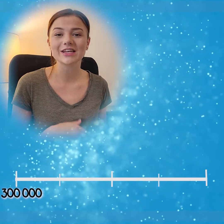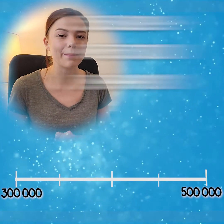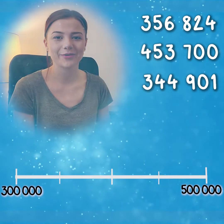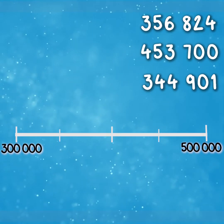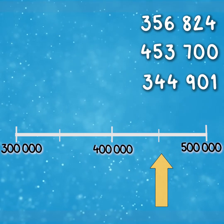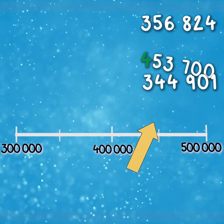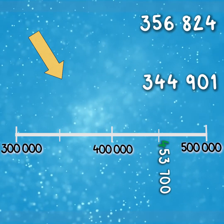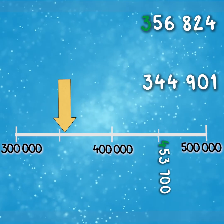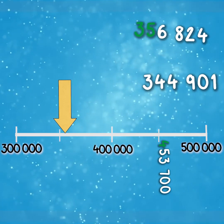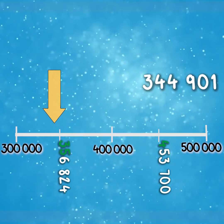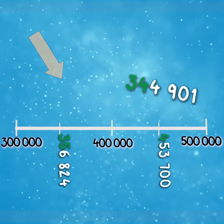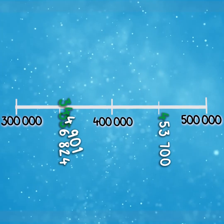We can check this using a number line too. Here is a number line that goes from 300,000 to 500,000. Can you try and place our three numbers on the number line? We know that 453,700 goes between 400,000 and 500,000 as it has a four in the hundred thousands column. We know that 356,824 belongs just after 350,000 as it has a three in the hundred thousands and a five in the ten thousands. And 344,901 will go just before 350,000 because, although it has a three in the hundred thousands, it only has a four in the ten thousands, which is less than the five in 350,000.